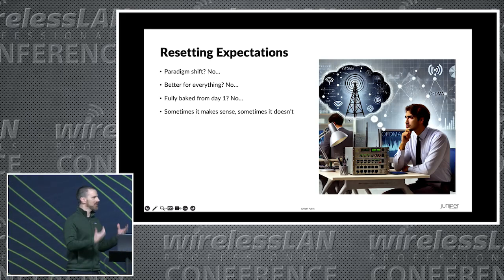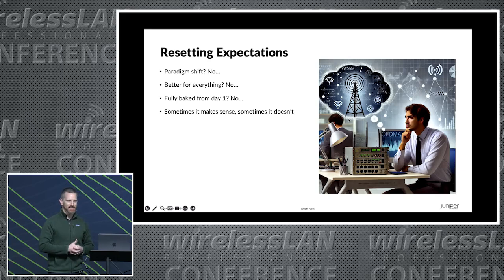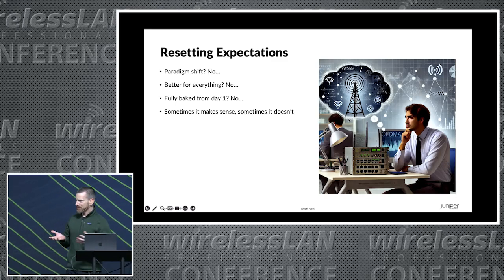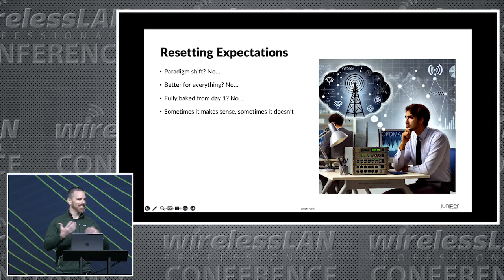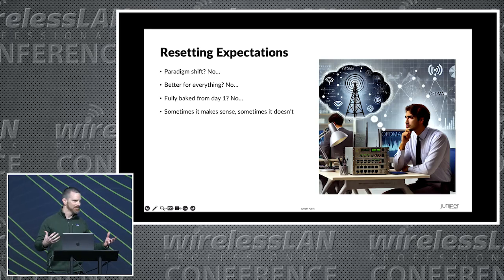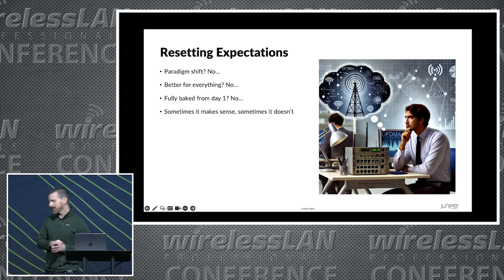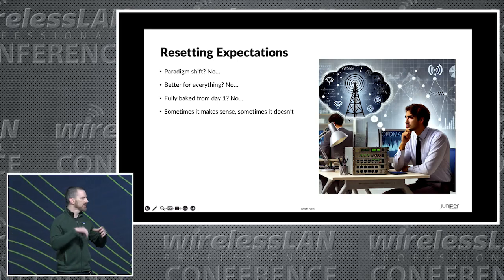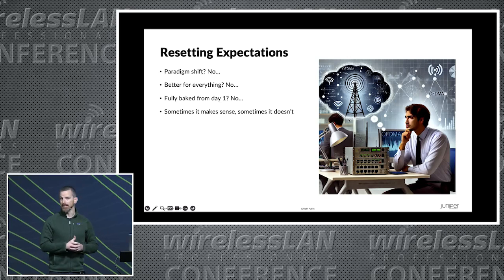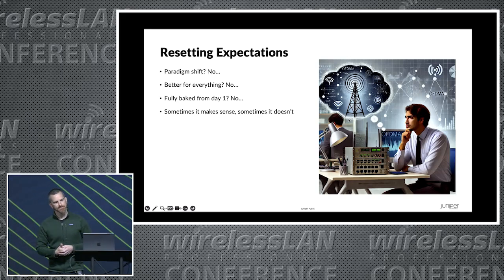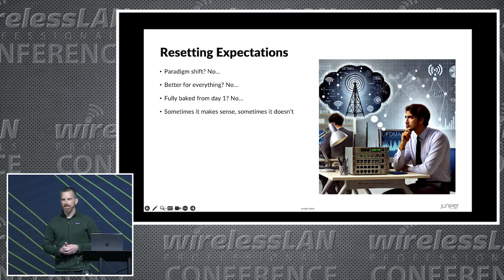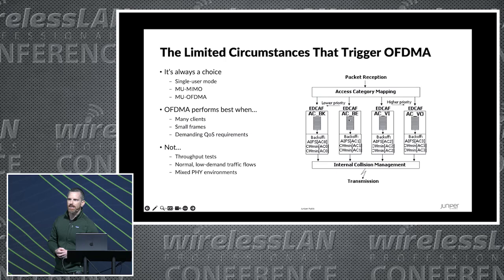The first thing we need to think about is what are our real expectations for this technology. I think back in the early days of Wi-Fi 6, some of the marketing around OFDMA was not helpful. At least me and I know others had the impression that if a network was all Wi-Fi 6 clients, it would be OFDMA all the time and it would be awesome. That's not the case. OFDMA only happens within the context of EDCA — the AP has to win the channel that way and then it can decide what it wants to do next. And what it decides to do is not always intuitive.